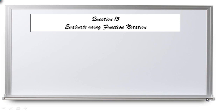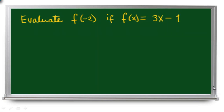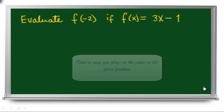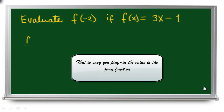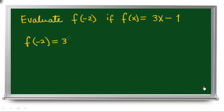Question 15: evaluate using function notation. Evaluate f of negative 2, if f of x is equal to 3x minus 1. It's just substitution — substitution is plugging in negative 2 into the function.